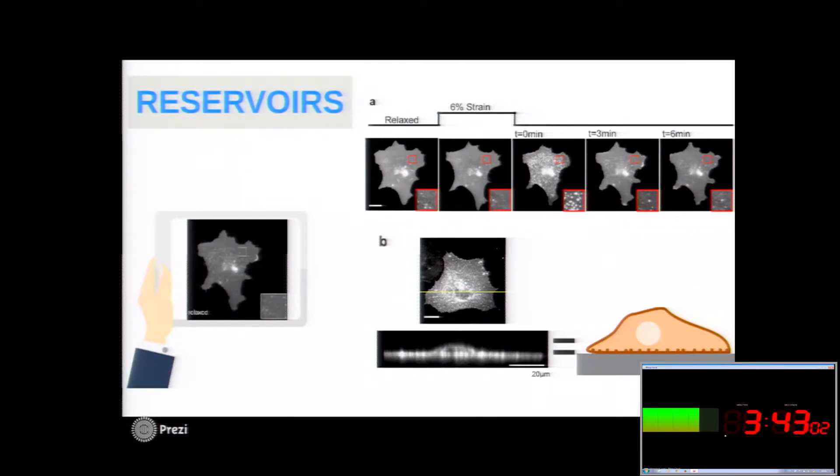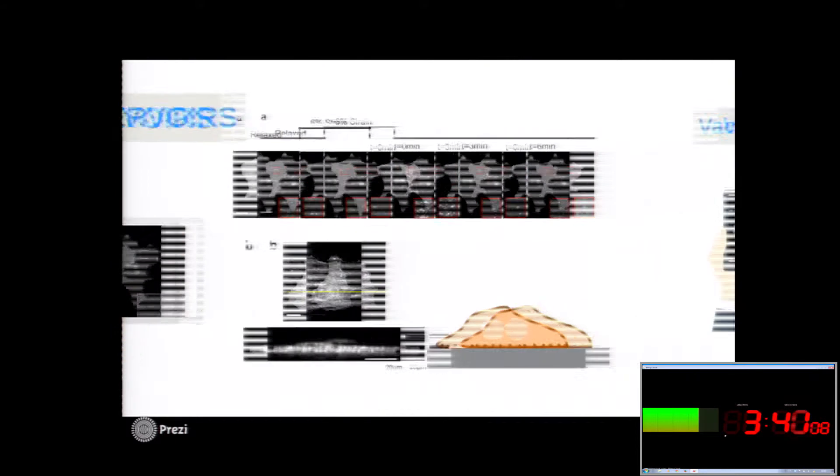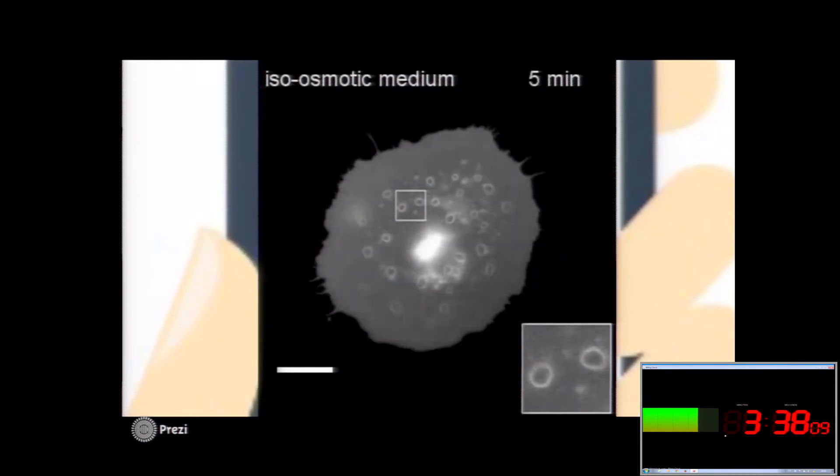With the hyposmotic shock, similar things happen. When you apply the hyposmotic medium, there are almost no changes. But once we reapply the isosmotic medium, immediately plasma membrane invaginations appear.